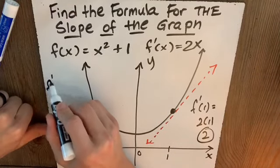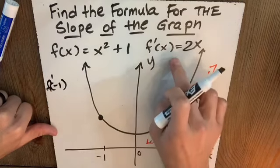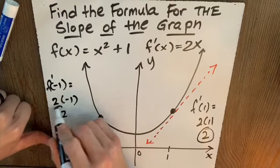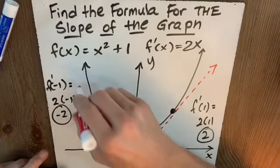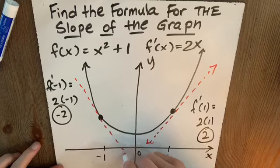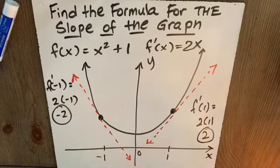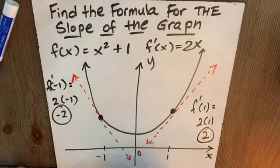How about negative 1 at x equals negative 1? Well, f dash of negative 1, I'm going to plug into this, is 2 times negative 1, which is negative 2. That's the slope here. Or the rate of change at this point. And I am expecting down and over. I'm expecting a negative rise over 1.